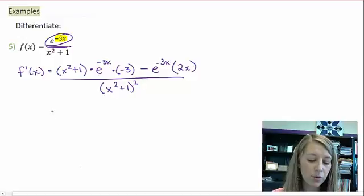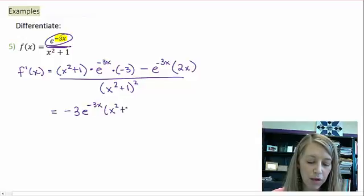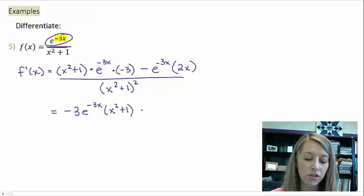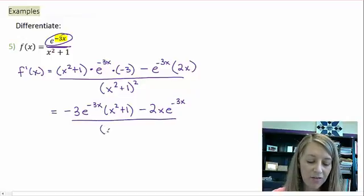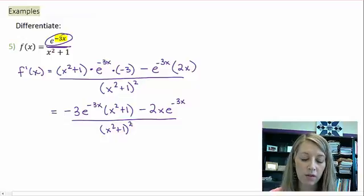So now what I have to do is simplify this. In the top, I have a negative 3e to the negative 3x times x squared plus 1, which I can distribute if I need to, minus 2x times e to the negative 3x. Denominator, I could foil it out, but I don't think that's going to gain me any ground, so I'll leave it as is.